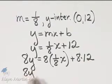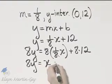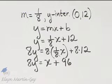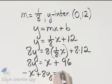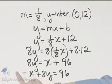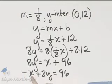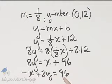Let's see what we have. We have 8y is equal to, this would be one x or simply x, plus 8 times 12 is 96. Now, I'll subtract x from both sides, and I'll have negative x plus 8y is equal to 96. You may see it written in standard form this way. If you multiply through by negative one, an equivalent form is x minus 8y is equal to negative 96.